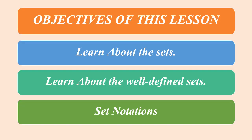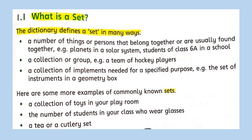The objectives of this lesson are that you will learn about sets, well-defined sets, and set notations. What is a set? The dictionary defines a set in many ways: a number of things or persons that belong together or are usually found together. Example: planets in a solar system, students of class 6A in a school. A number of things or persons — a collection or group.